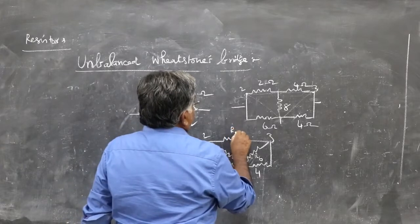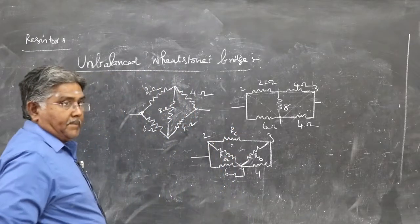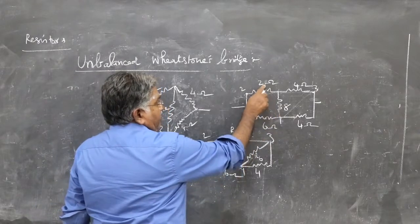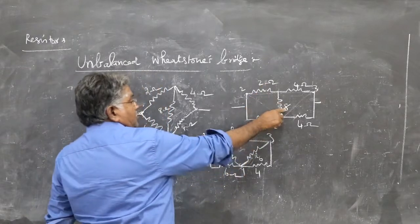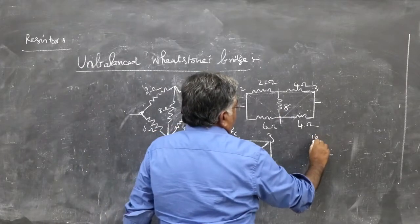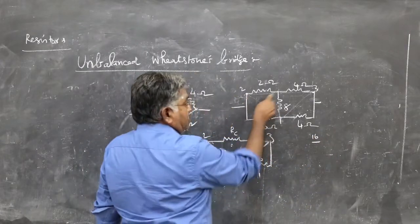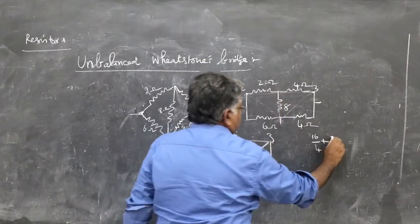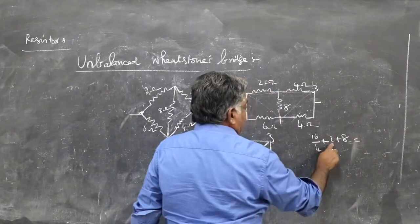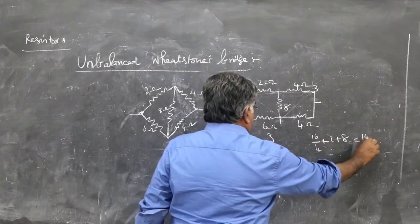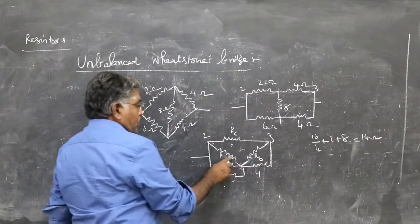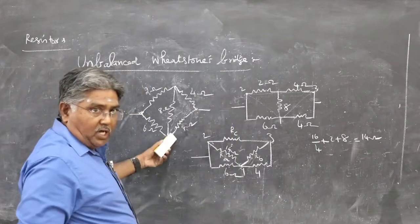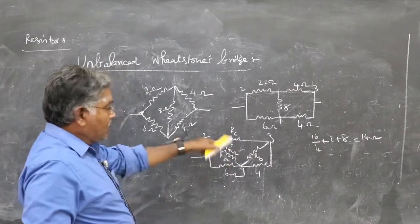RA means multiply these two resistors, 16, by the opposite resistance: 4 plus 2 plus 8, 14 ohm. So this will be 14 ohm. Please refer to the earlier videos, otherwise you won't understand this.